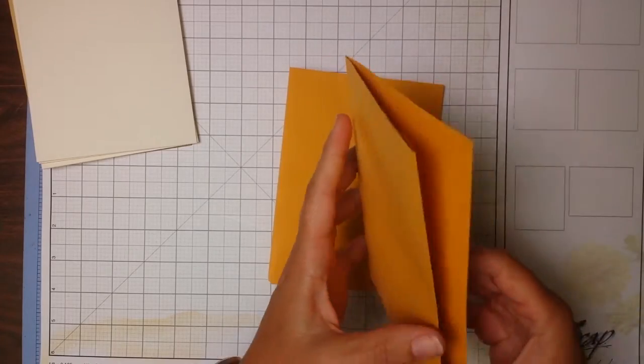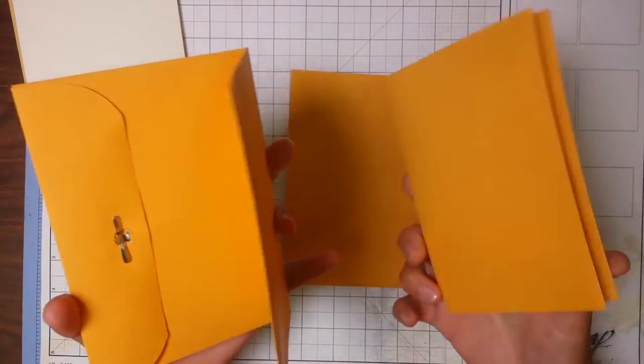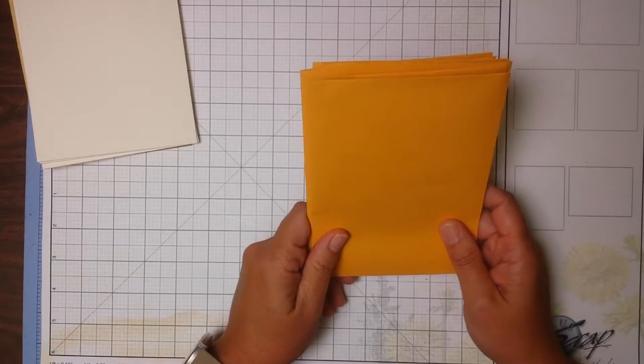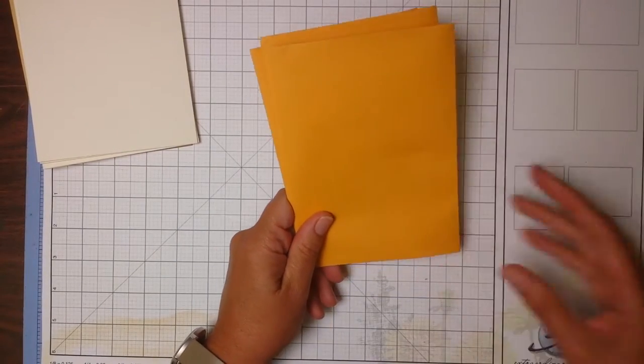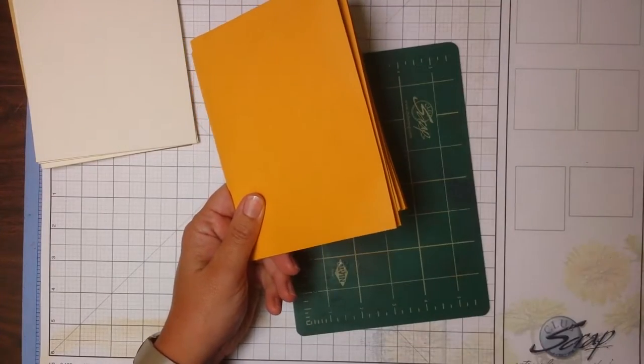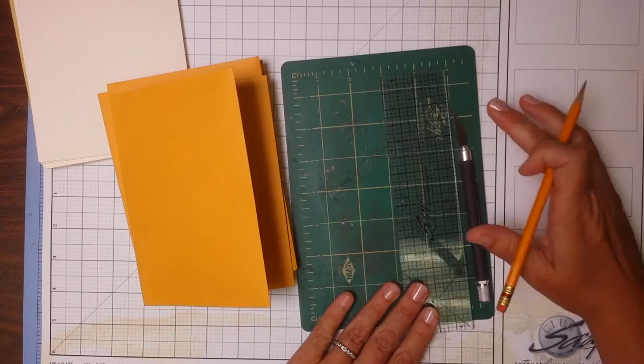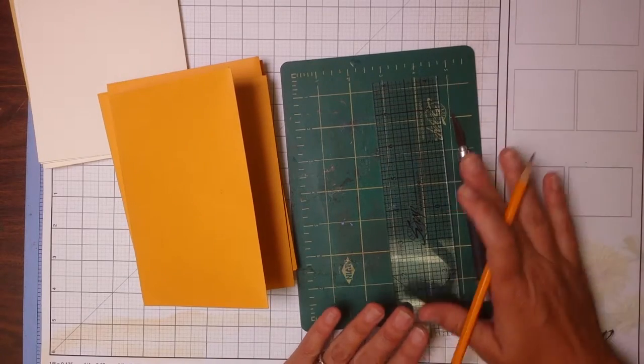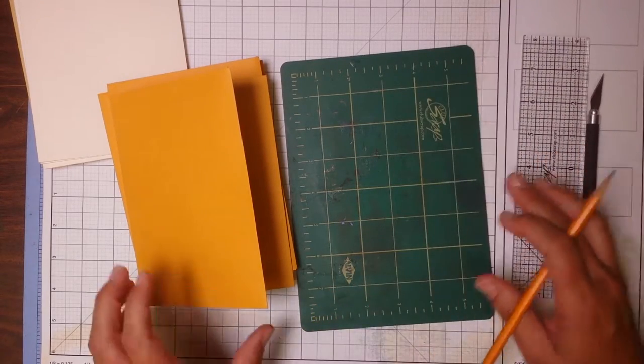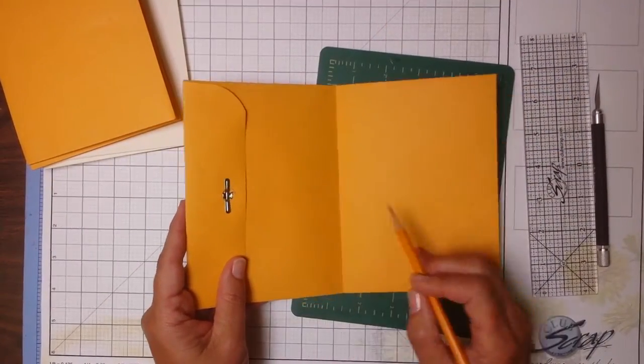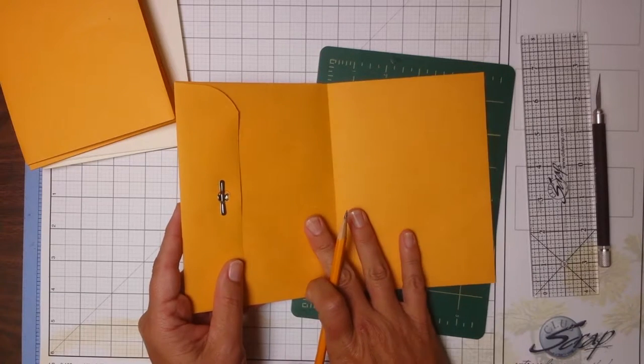There's a little work we still need to do to prepare our pocket pages. We need to add that little angle to double the duty of the pockets. To do that, you'll need a ruler, a craft knife, a cutting mat, and a pencil.